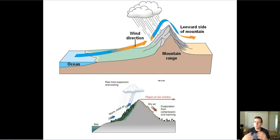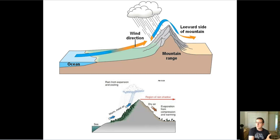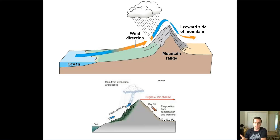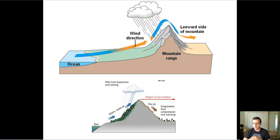So as you can see, rain shadow — this is what this phenomenon is called — also helps determine the way ecosystems work. While one side of the mountain is very moist and creates a forest or grassland environment, on the other side it's very dry and more desert-like. So topography is important for weather both in terms of altitude and in terms of blocking the weather patterns that happen around the world.